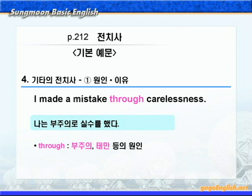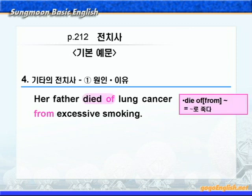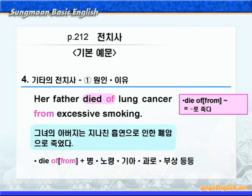다음으로 die of 또는 die from에 대해서 살펴보죠. die of 혹은 die from하면 '뭐뭐로 죽다'라는 말이죠. lung은 '폐', cancer는 '암'이라는 뜻이니까 lung cancer하면 '폐암'이 되겠죠. excessive는 '과도한'이라는 뜻이니까, 'her father died of lung cancer, from excessive smoking.' '그녀의 아버지는 지나친 흡연으로 인한 폐암으로 죽었다'가 됩니다.